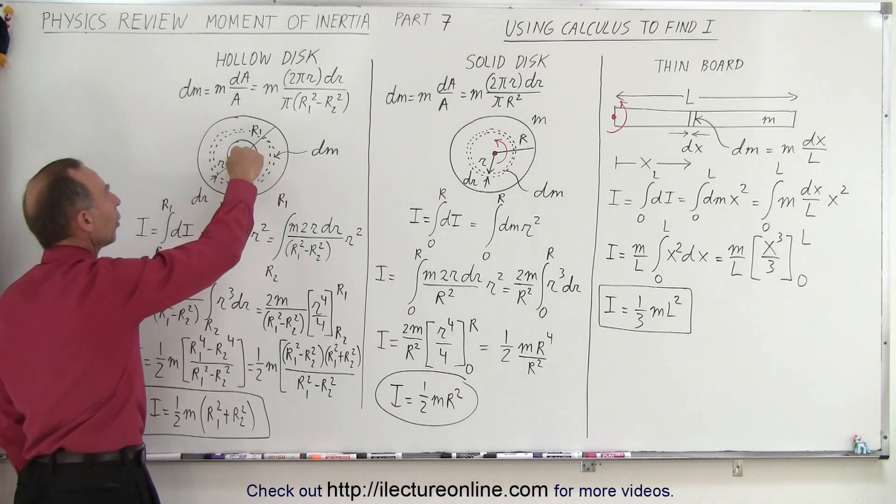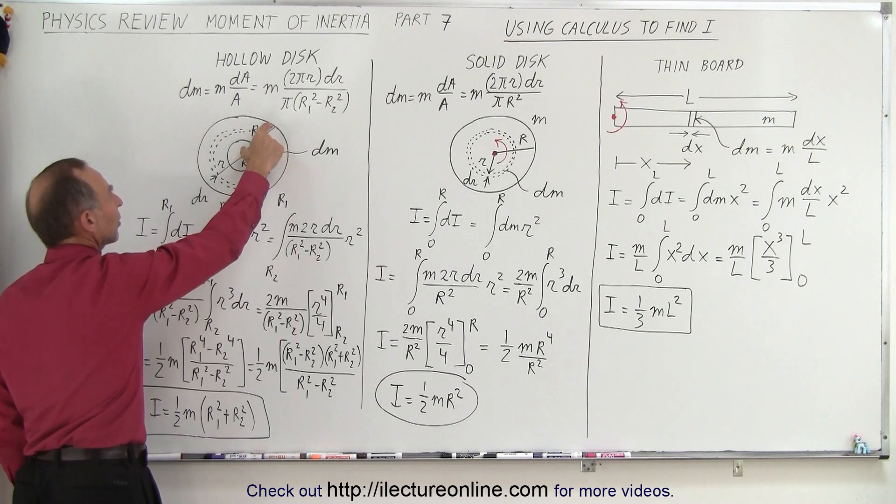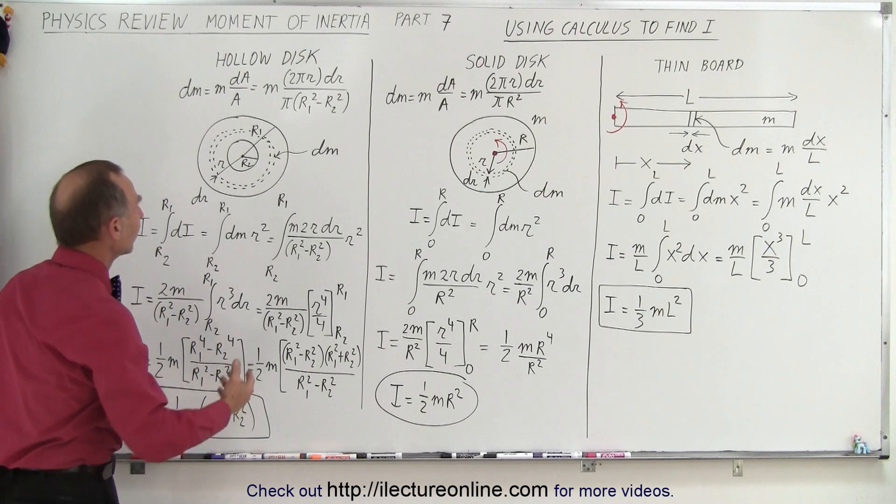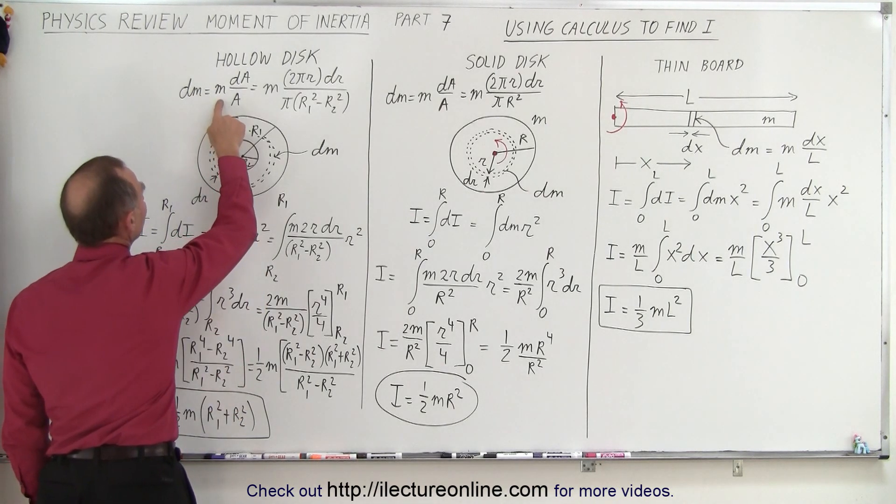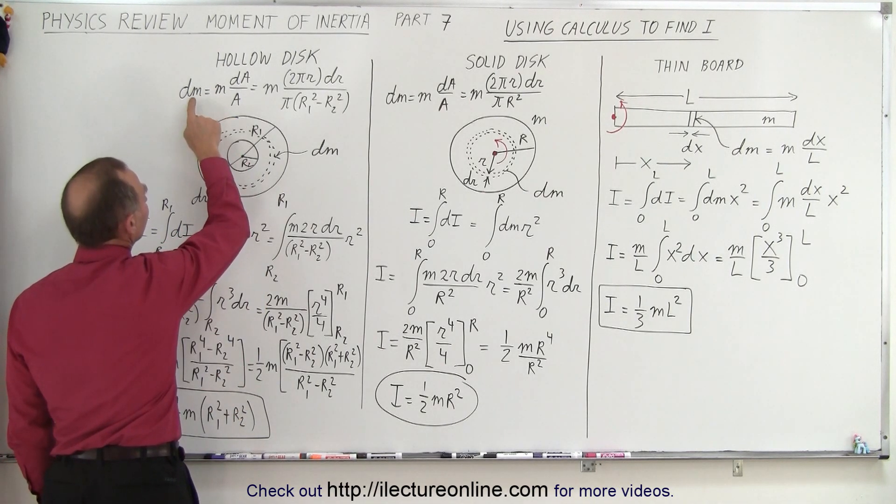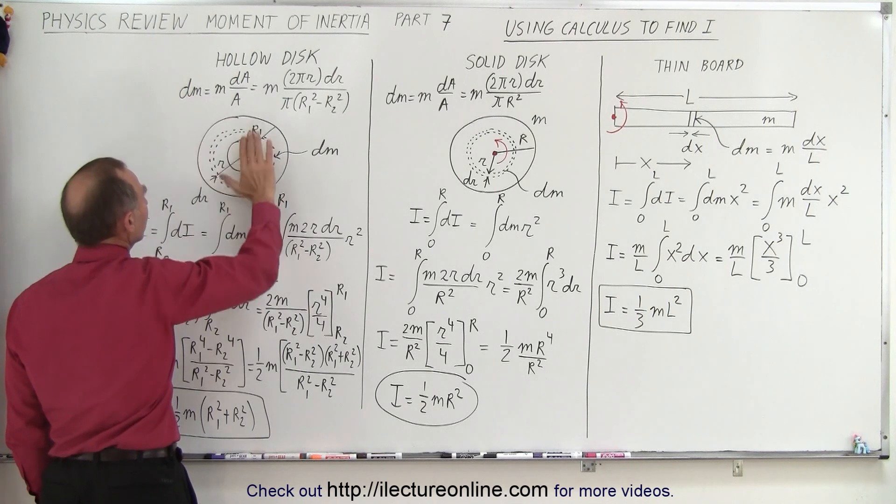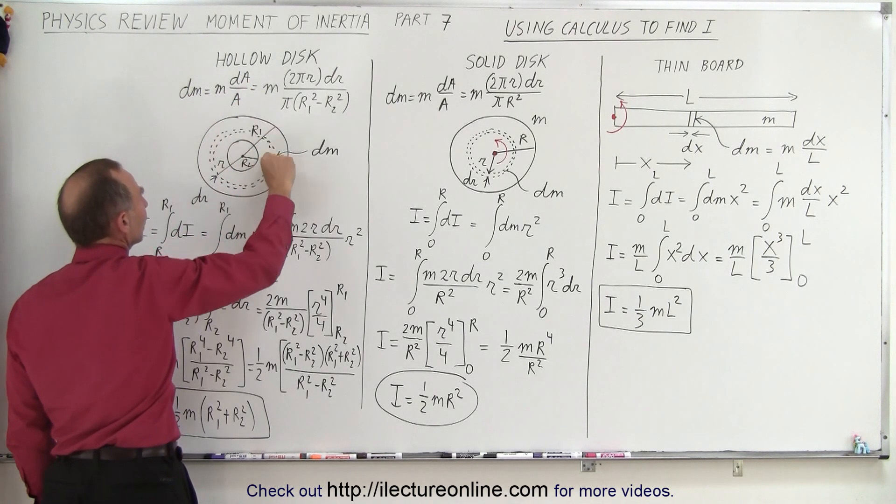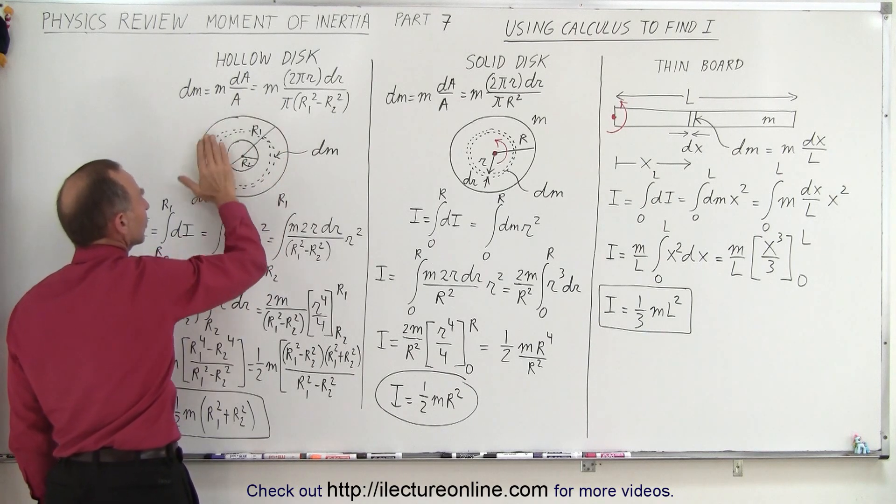Finally, let's do the disk with a hole inside. So we have the outside radius r1 and the inside radius r2. So we have the same principle. Again, we find dm, and dm is going to be equal to the mass of the whole disk multiplied times the ratio of the surface area of the little ringlet divided by the area of the total disk.